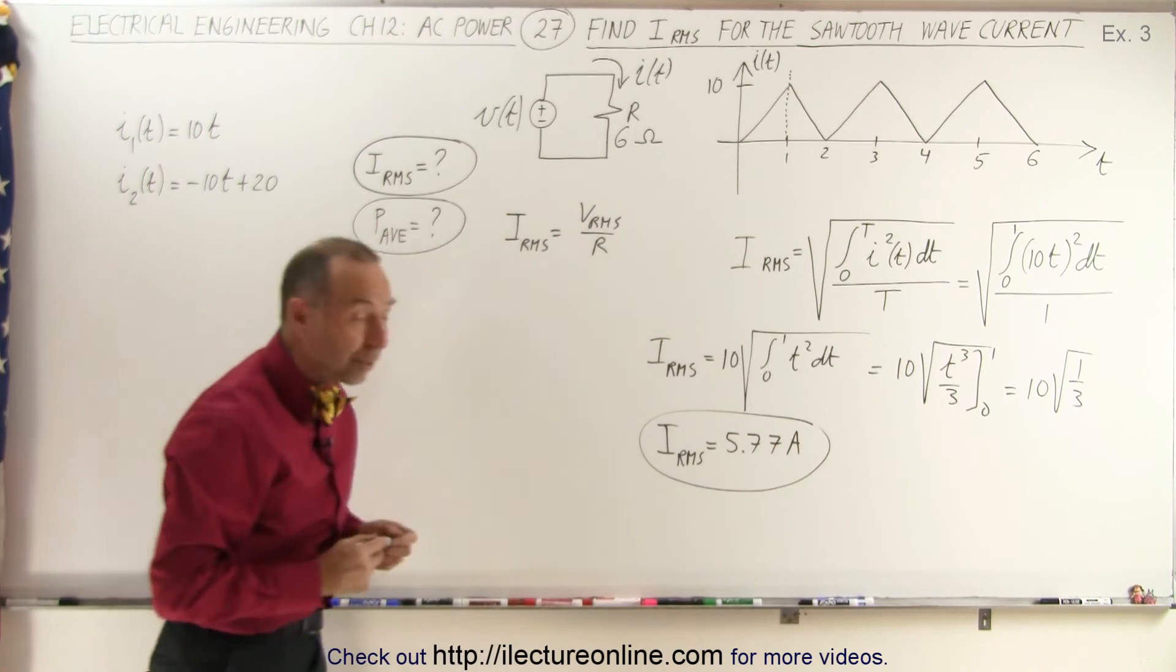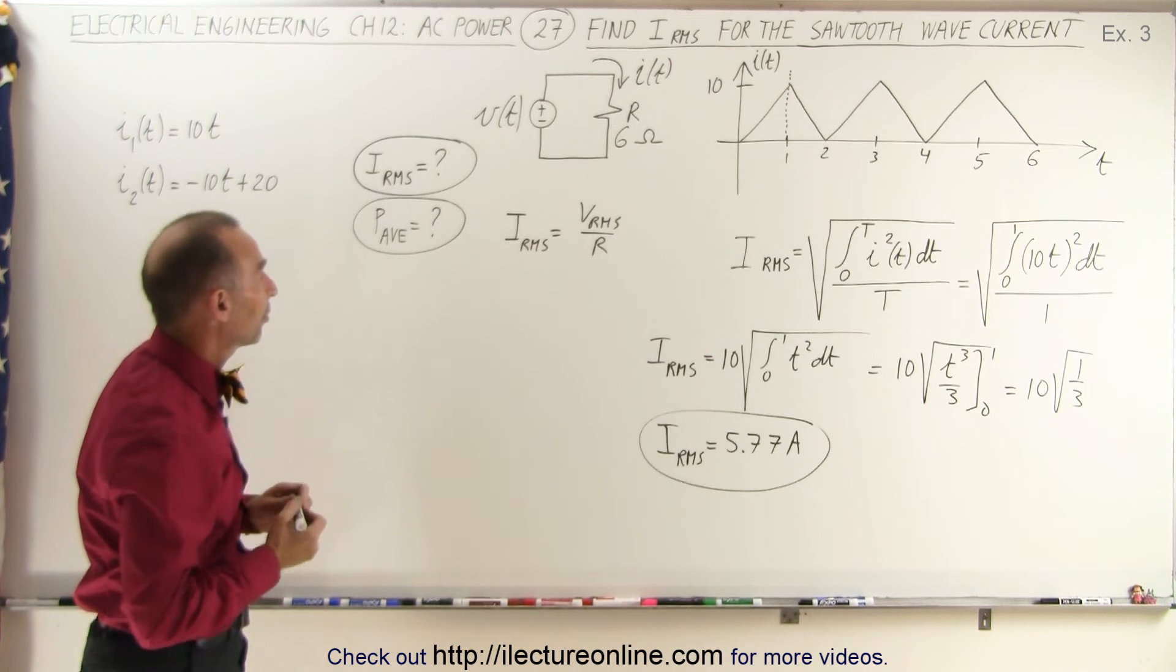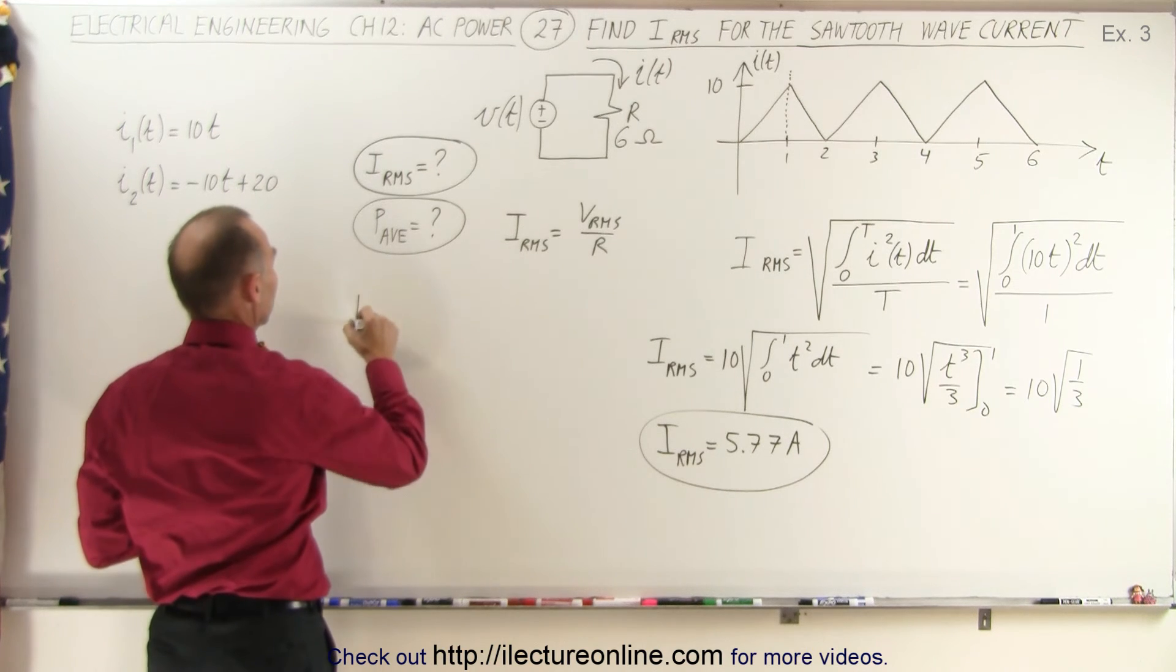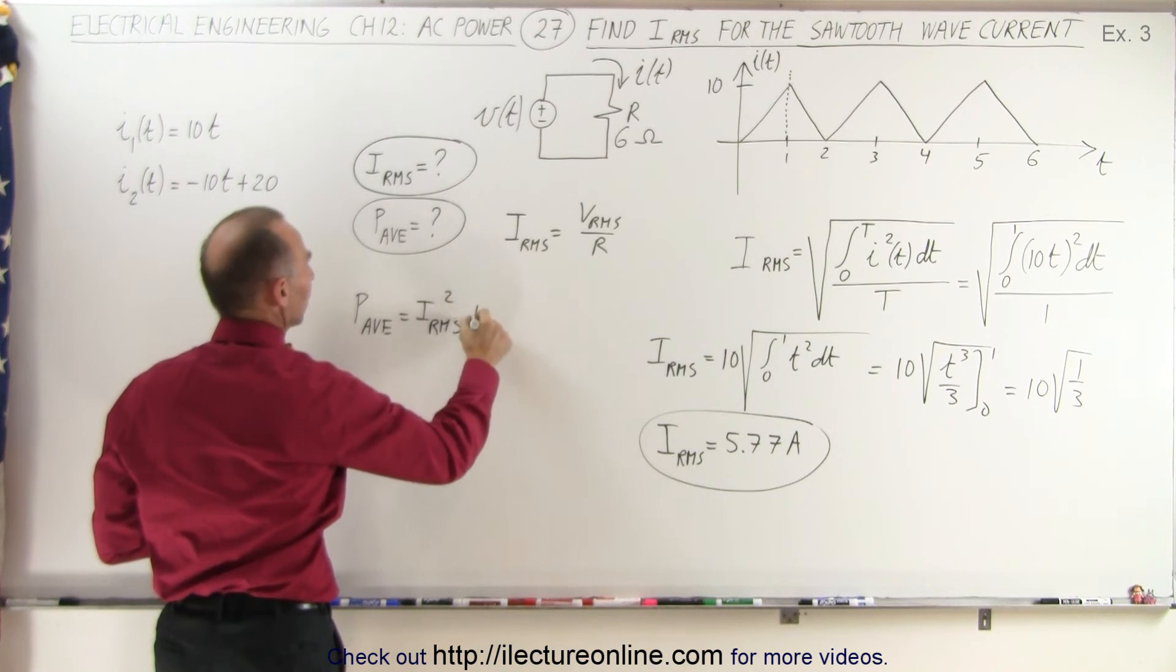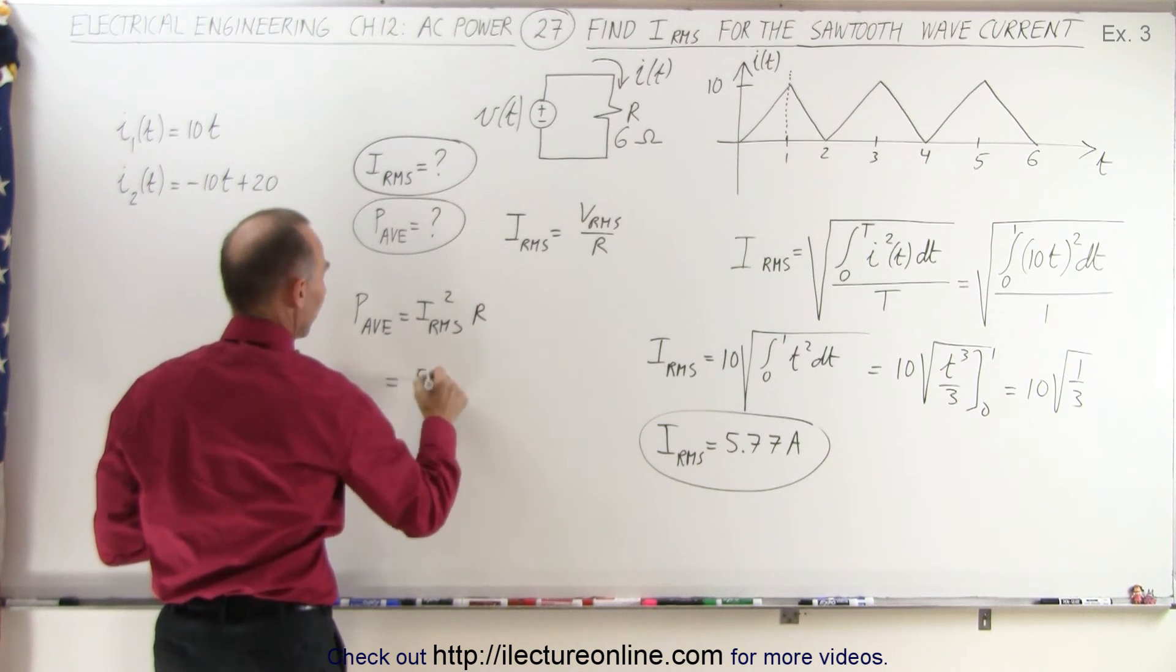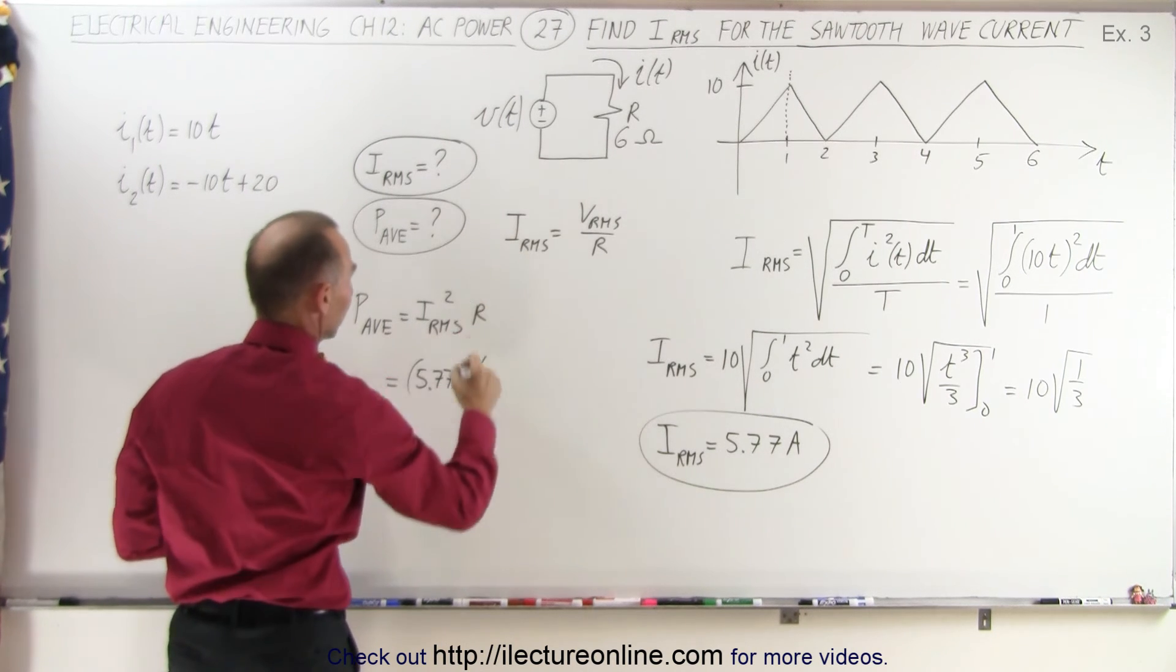Now that we have the RMS current, let's find the average power delivered to the resistor. Average power equals I_RMS squared times the resistance. So this would be 5.77 squared times the resistance of six ohms.